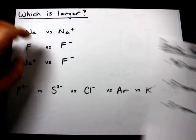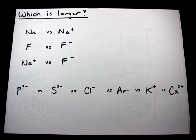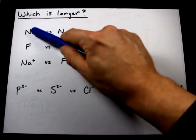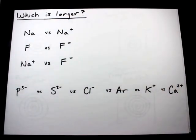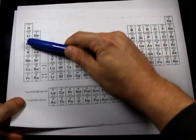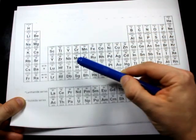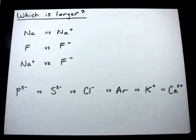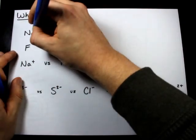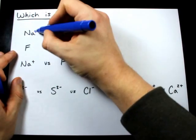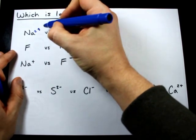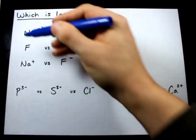We're going to play a game called which one's larger. Sodium versus sodium plus. Well, sodium on its own as a metal has three occupied shells: first shell, second shell, third shell. If you were going to draw the Bohr-Rutherford diagram for Na, it would have two electrons in the first shell, eight electrons in the second shell, and one electron in the third shell.